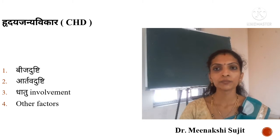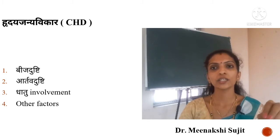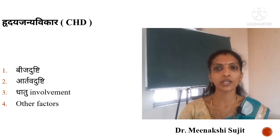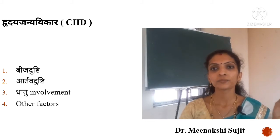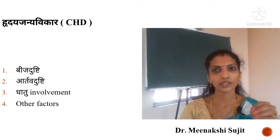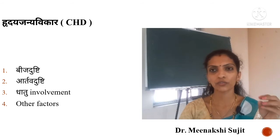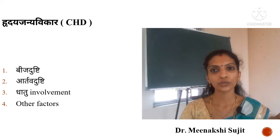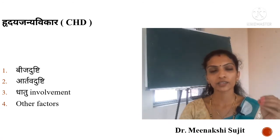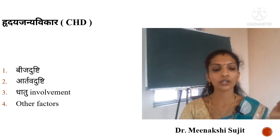Arthava Dushti is emphasized because Matruja Bhava is especially responsible for heart-related organogenesis. Any vitiation in Arthava Dushti can therefore cause congenital heart diseases. The third factor involves the main Dhatu — Rakta Dhatu — and the Dosha involved, which is Kapha Dosha, both of which govern the development and functional organogenesis of heart-related systems. Any vitiation of Rakta Dhatu and Kapha Dosha will create Rudyajanya Vikaras.